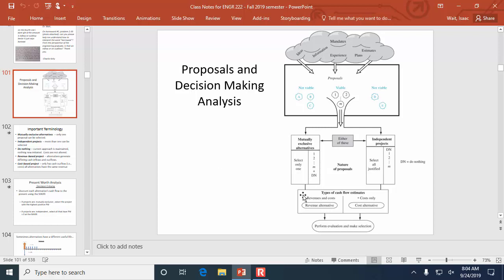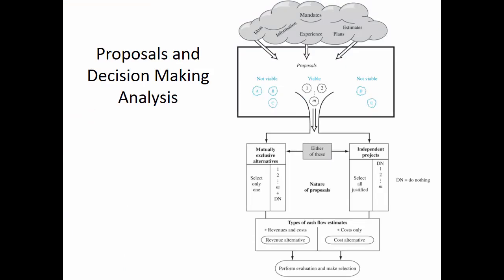What we're going to be talking about today is decisions through present worth analysis. This figure is in your textbook. It's a schematic representation of how ideas are generated, how they're compared, and how you ultimately decide which of many different possibilities to select. This cloud represents all the thinking that goes into generating ideas, and those ideas are formalized in proposals. Proposals are initially sorted between those that are viable and those that are not viable — for example, where the equipment isn't available or your company doesn't have the required expertise.